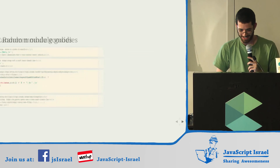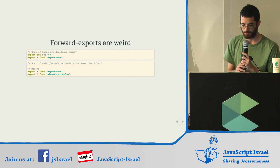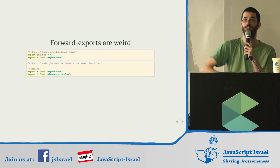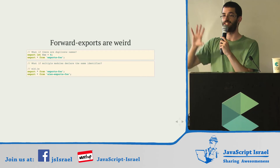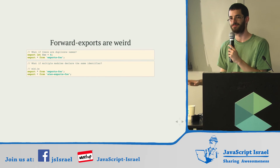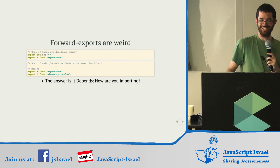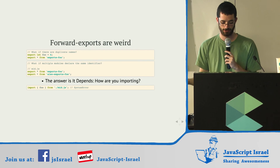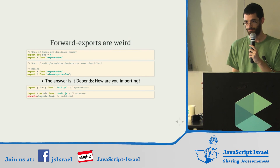One funny thing: you have export asterisk, which exports everything from another module. Here's a question — you export everything from a module which exports a variable named foo, and you export everything from another module which also exports foo, then you import foo. What happens? If you import specifically foo, the language throws a syntax error at your face because it can't determine which foo. However, if you import everything with import star, it's not an error — you just don't get foo.